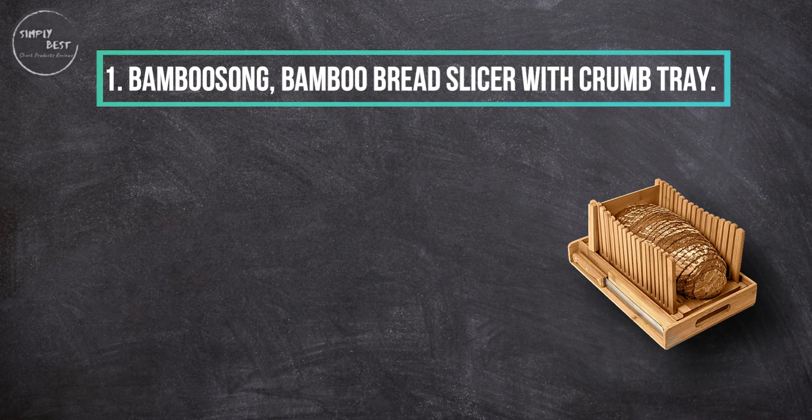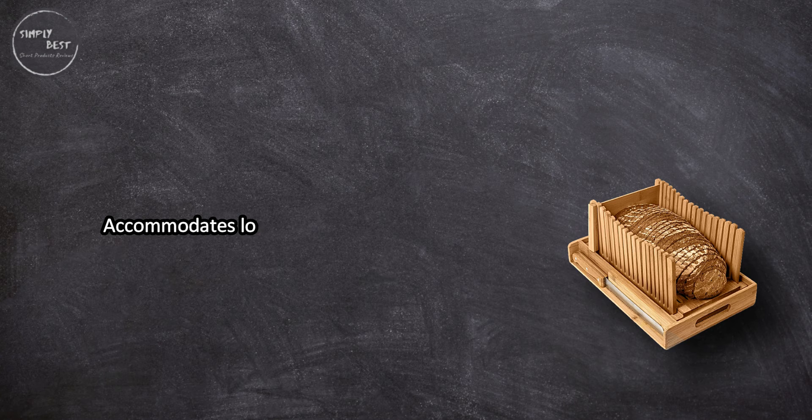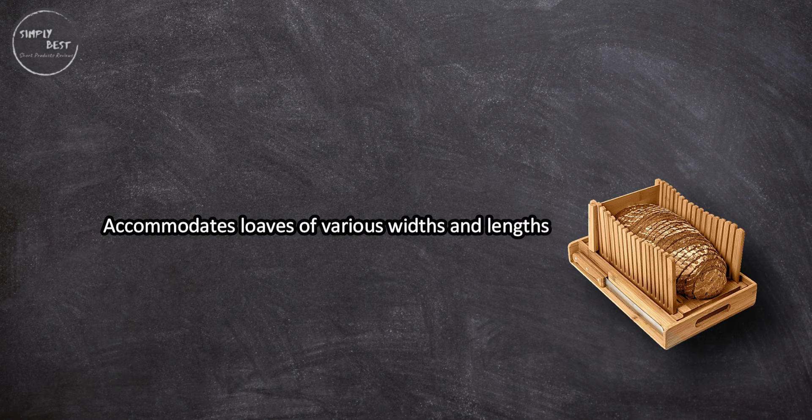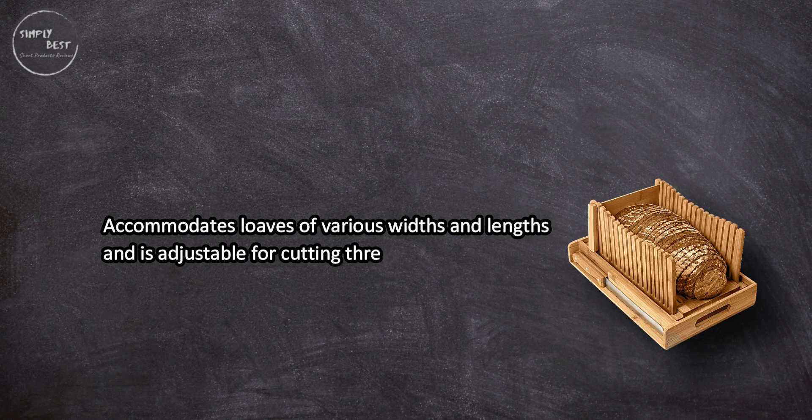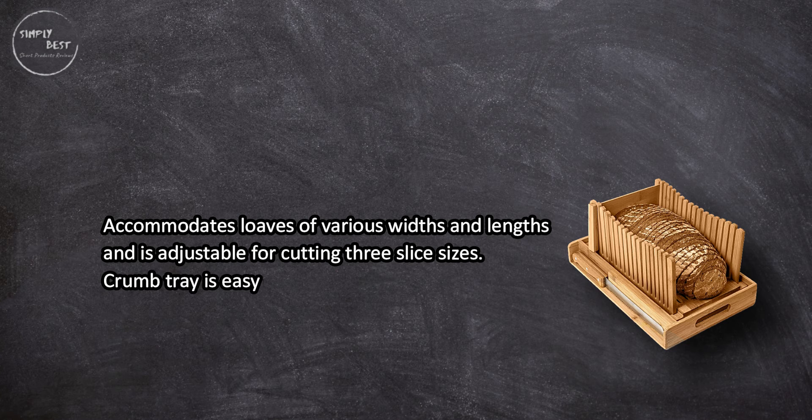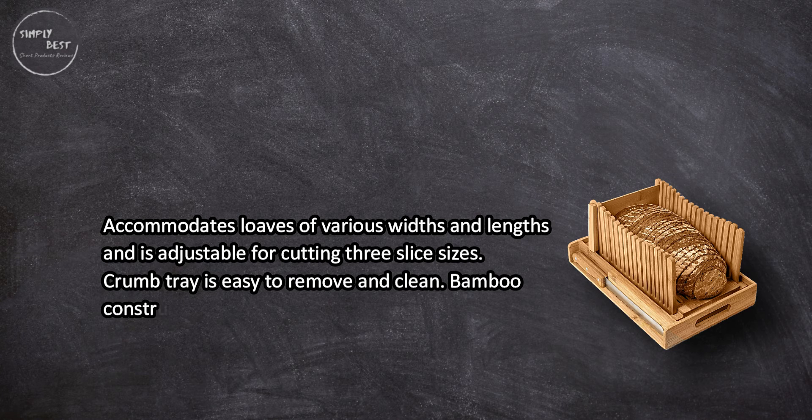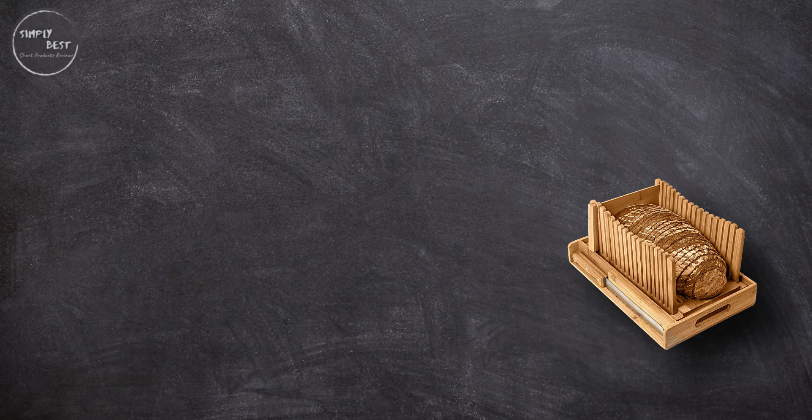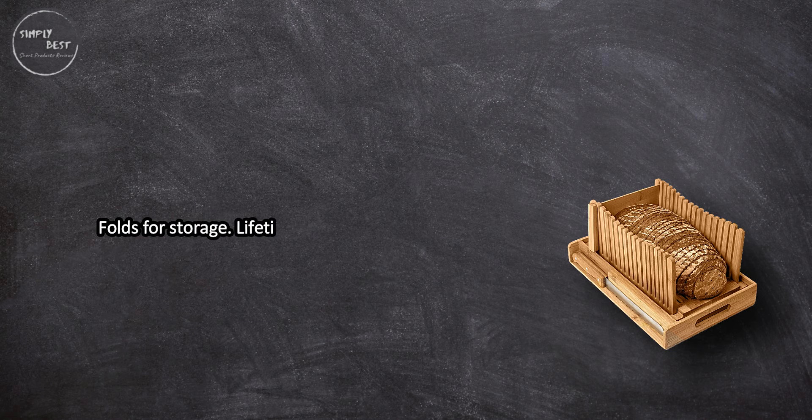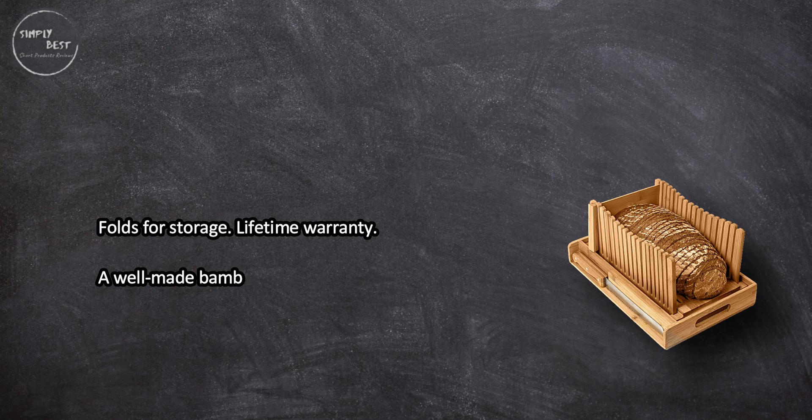Accommodates loaves of various widths and lengths and is adjustable for cutting three slice sizes. Crumb tray is easy to remove and clean. Bamboo construction is durable and sustainable, folds for storage, lifetime warranty.